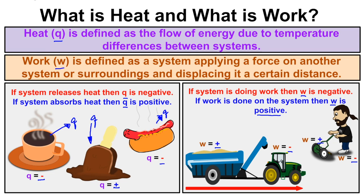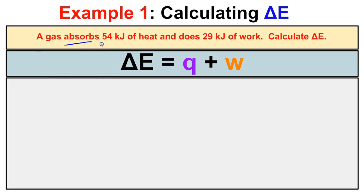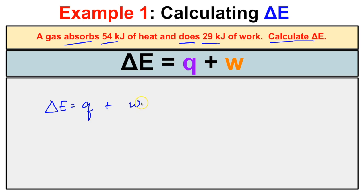In this first example: a gas absorbs 54 kilojoules of heat and does 29 kilojoules of work. We want to calculate the change in the system's energy. Looking at heat first — since the gas is absorbing heat, the sign of q is positive: q = +54 kJ. Looking at work — the gas is doing work on the surroundings, so w is negative: w = −29 kJ.